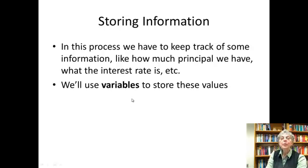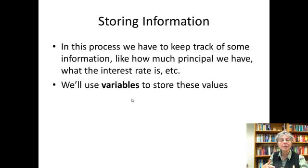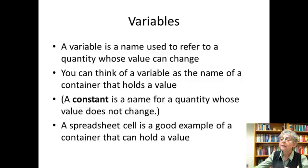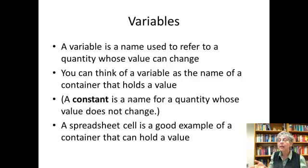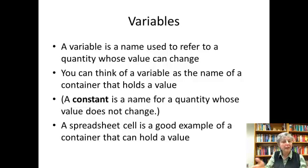In this process, we're keeping track of information, and I gave names to various pieces of it — like R for the interest rate, N for the number of years. Those are what we call variables — a name we give to a quantity whose value can change. You can think of it as a name of a container that holds a value. By contrast, there are also constants — names for quantities that can't change. A spreadsheet cell is a good metaphor for a variable: it's a place where you can put a value, and that value could change.